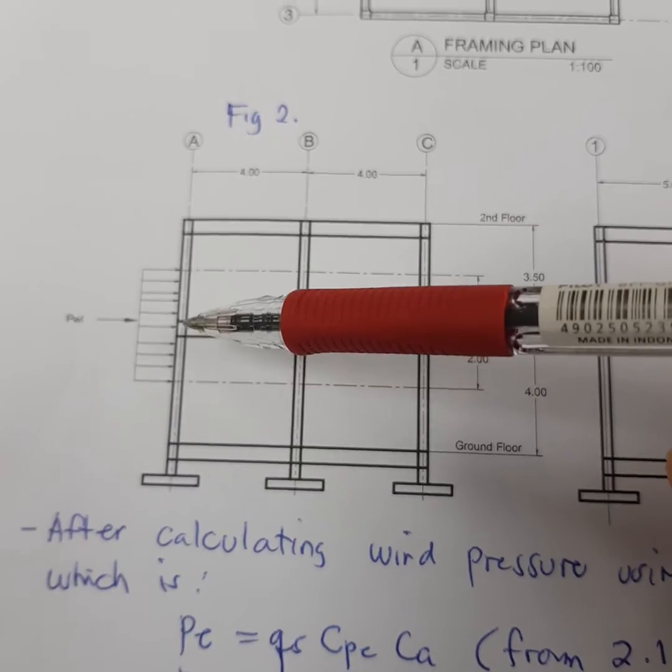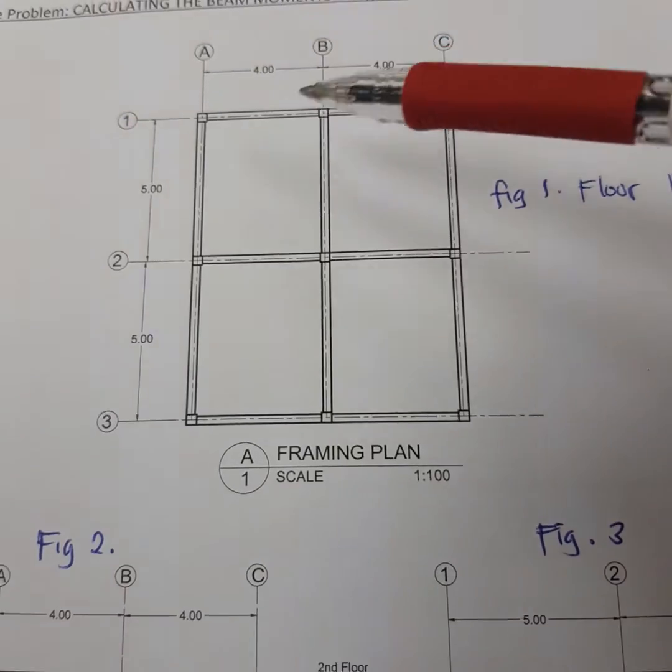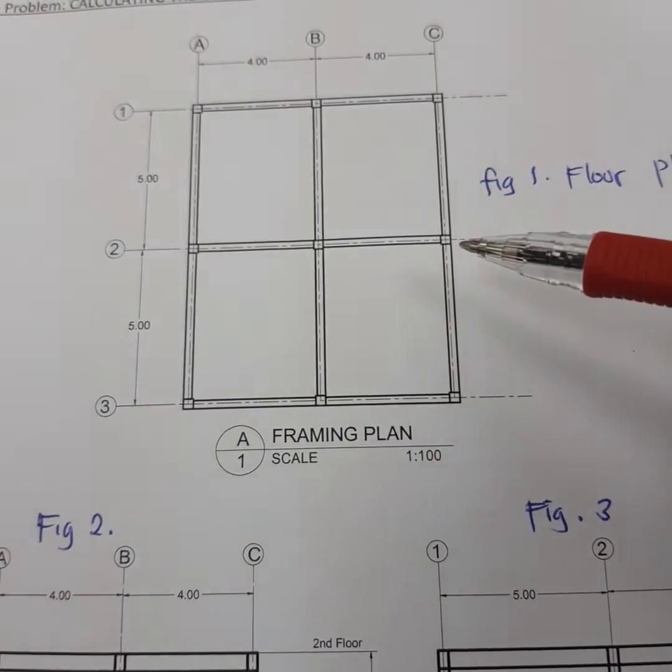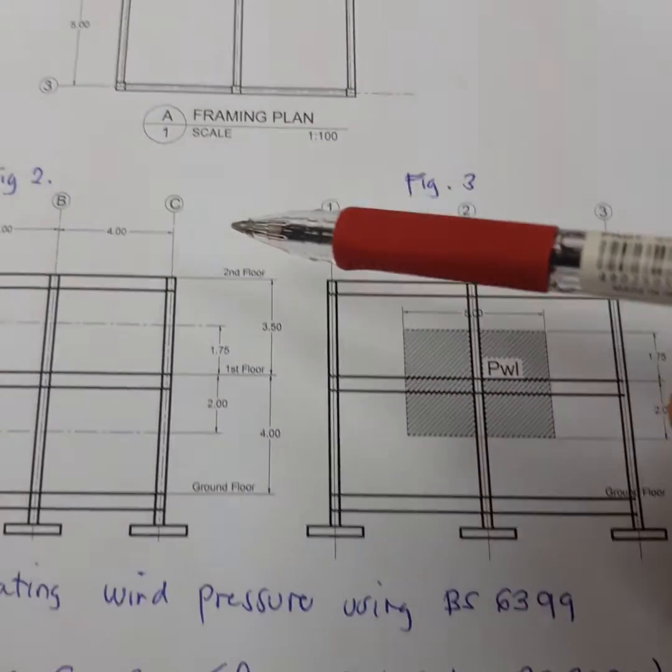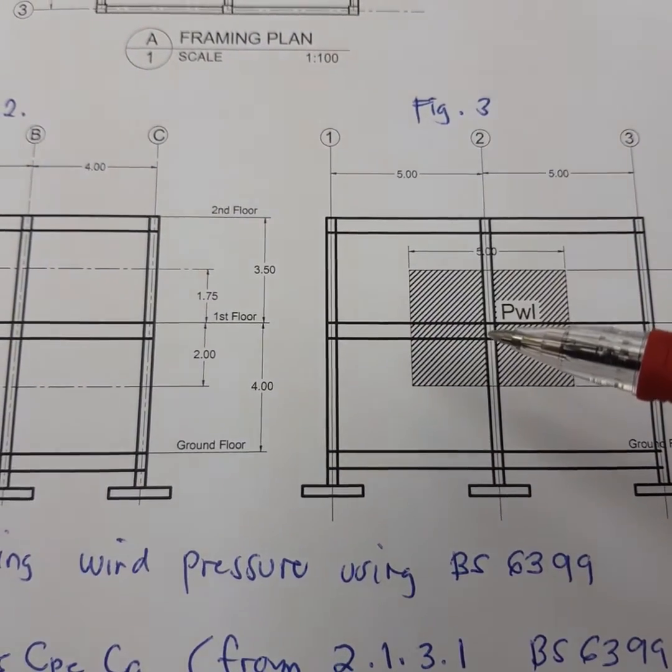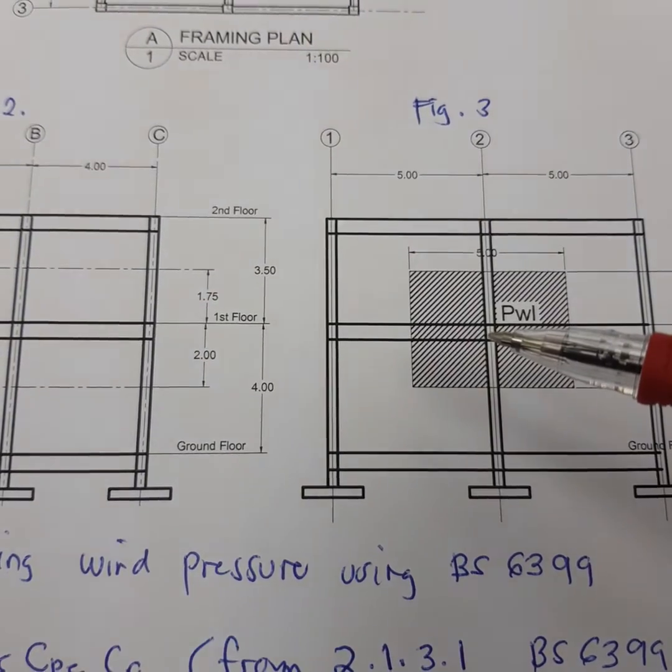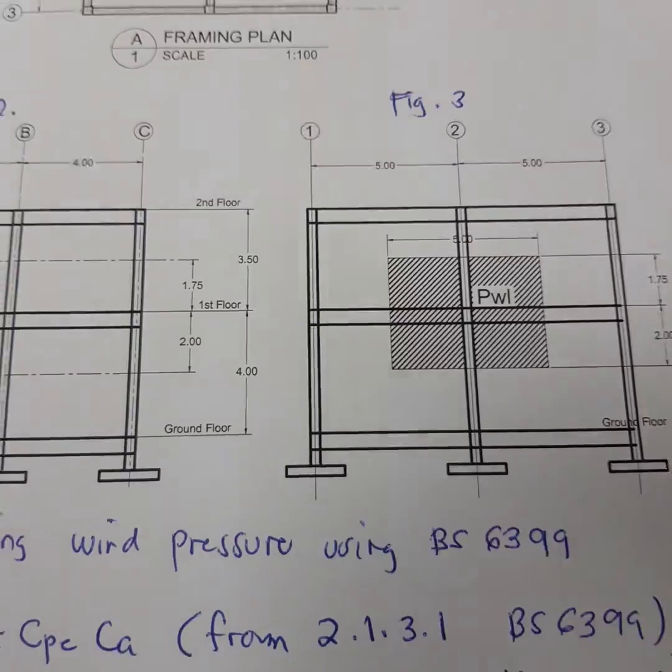This frame is ABC, check with this one ABC, meaning it's here. The lateral force acting on this area for this joint on the first floor. Then you can compute also on the second floor.